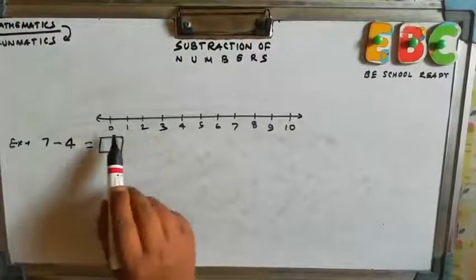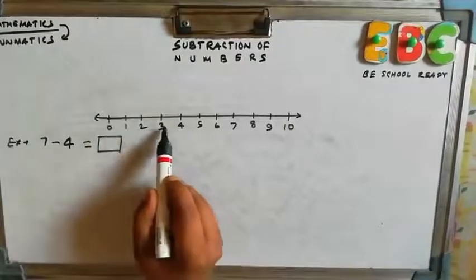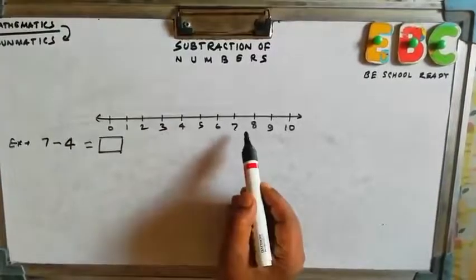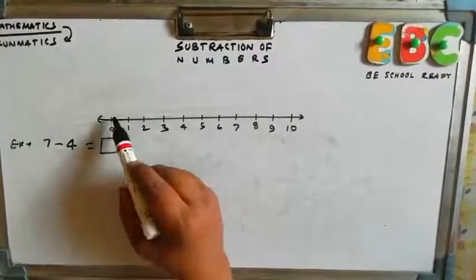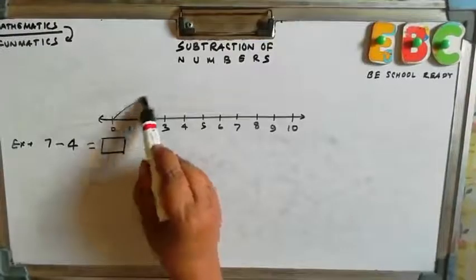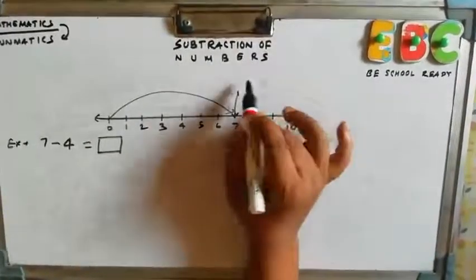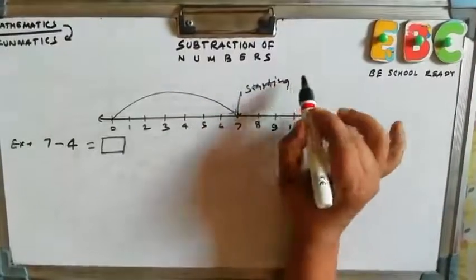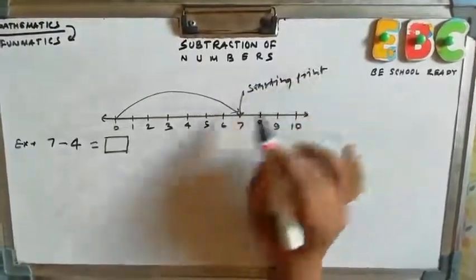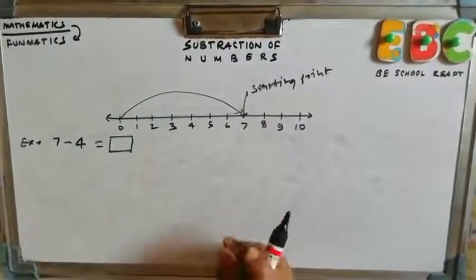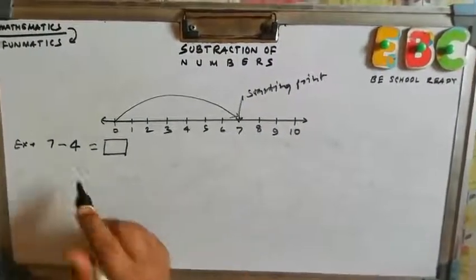We have to skip 1, 2, 3, 4, 5, 6 to reach at 7. So we skip to 7. This is our starting point. Right. Now we are at 7.